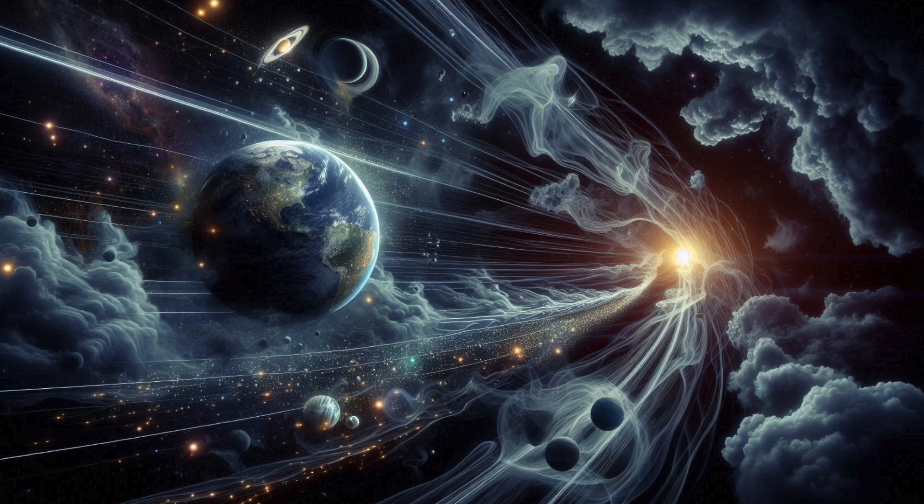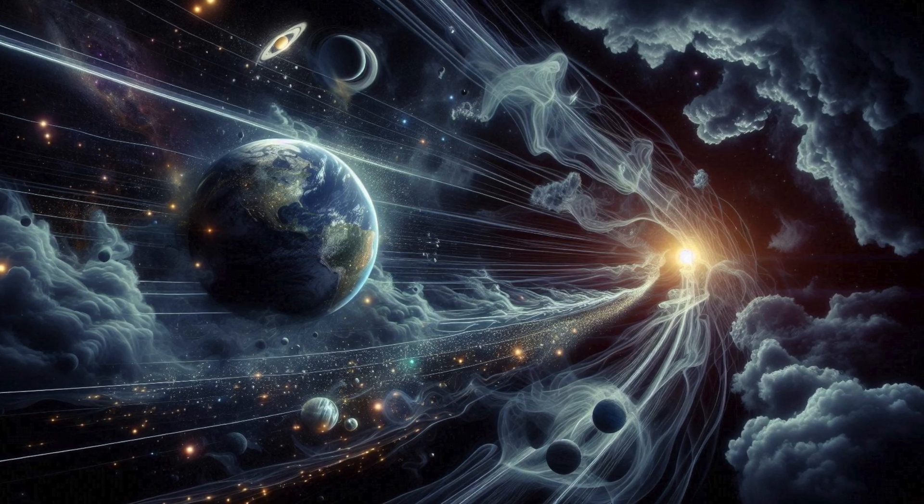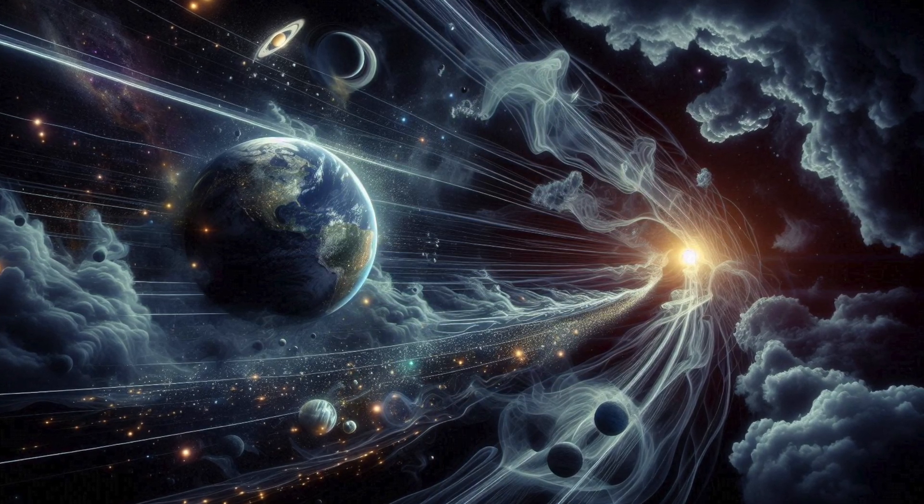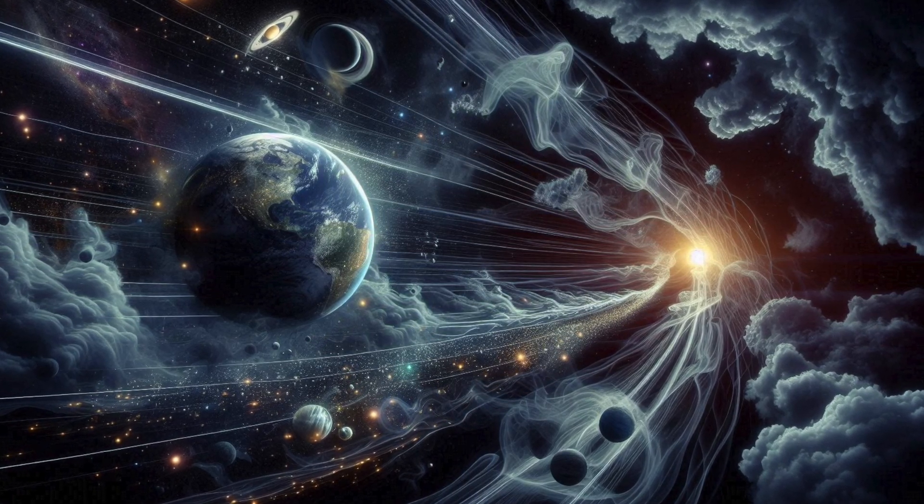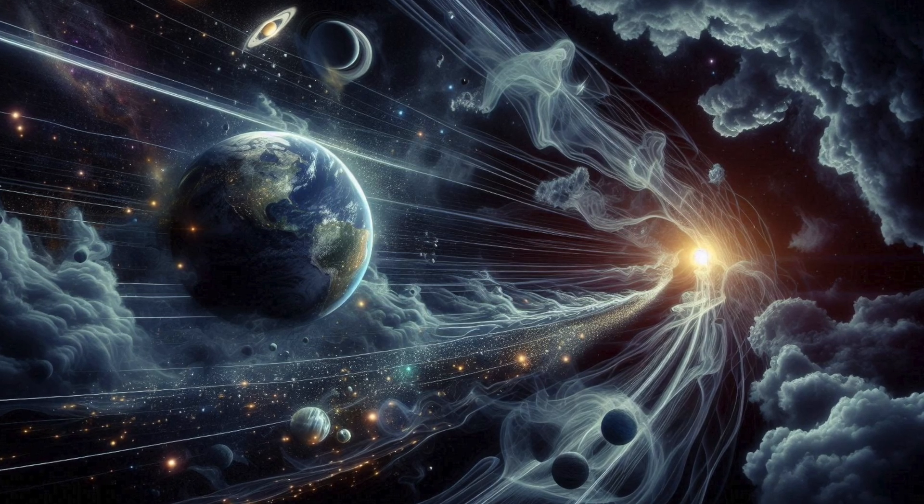The solar system hurtles through this dark matter haze at over 130 miles per second. Remarkably, dark matter particles are incredibly minuscule, effortlessly passing through us as Earth orbits through space.